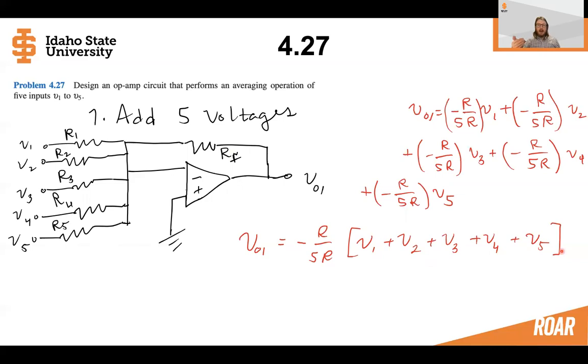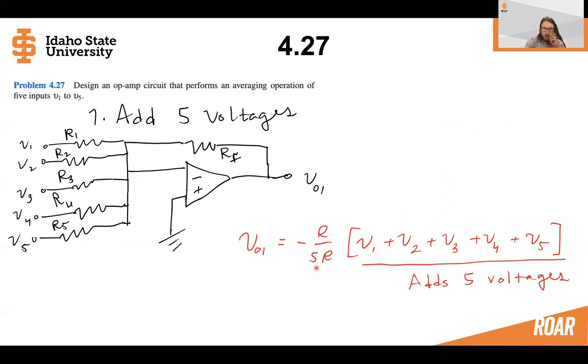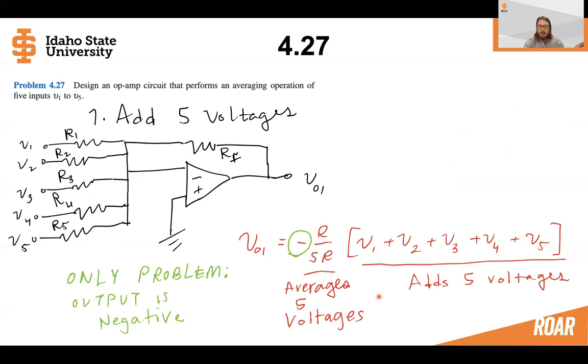So we're doing pretty good, right? We've added five voltages together, and we've actually also averaged them. So this is five divided by five here. So we've added five things together, and we've divided by five. But we do have one problem. We've added five things together. We've averaged them together. But shoot, look at this. The problem is our output voltage is negative. So this summed and averaged them, but we still have this negative gain. So can we fix this?